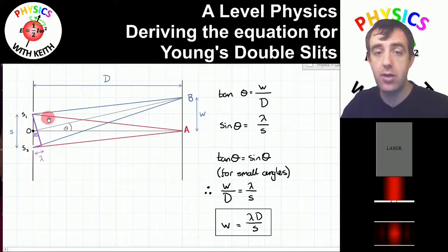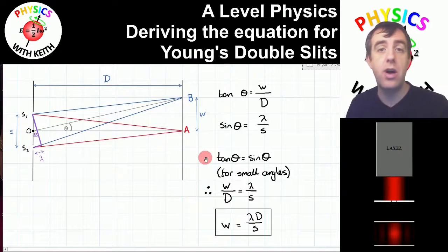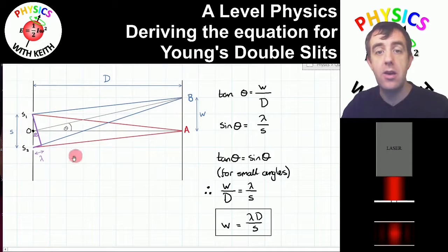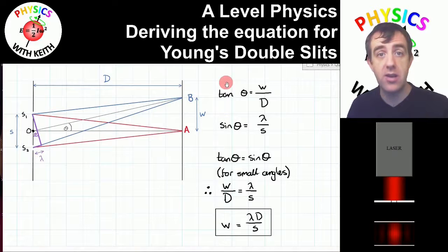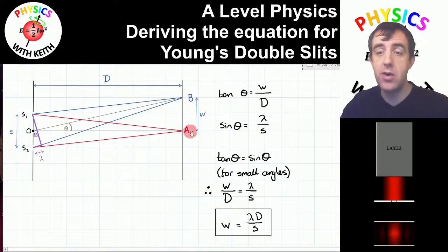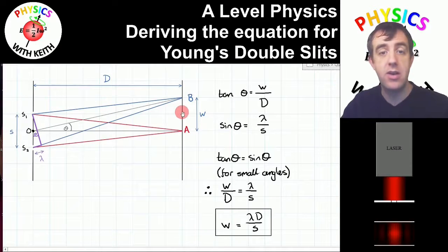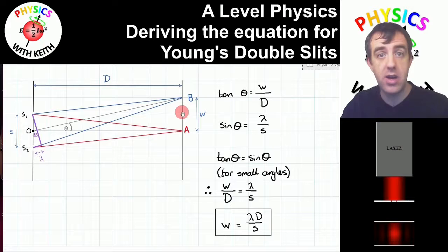At point a, the path length from s1 to a equals the path length from s2 to a, giving zero path difference and hence zero phase difference. At point b, the path length from s1 to b is smaller than from s2 to b by exactly lambda, so the phase difference is two pi radians — equivalent to zero — giving constructive interference. A point halfway between a and b would have a path difference of half a wavelength, a phase difference of pi radians, and destructive interference — a dark fringe.